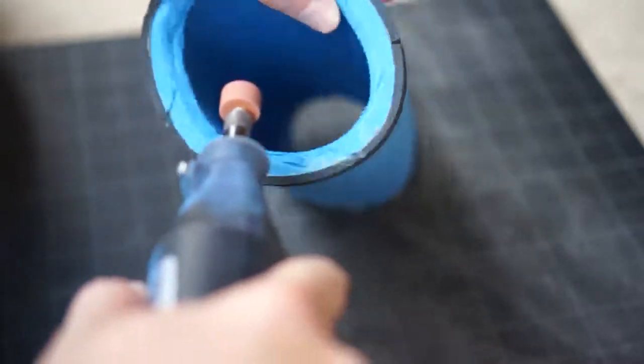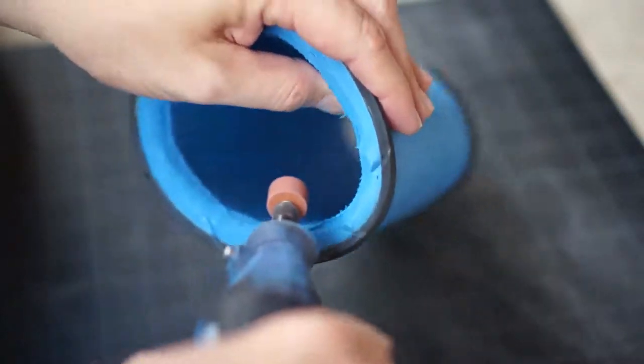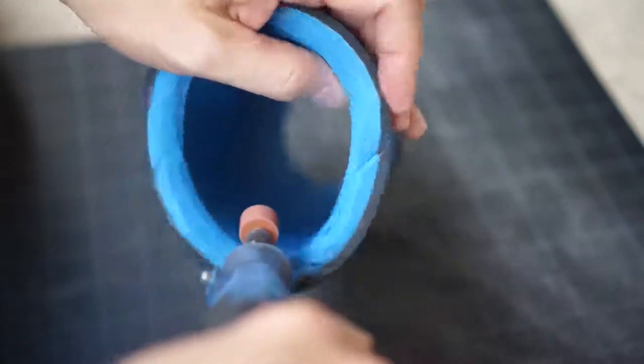I used a dremel with a grinding stone and sanded the inside edges of the bracer. This allowed my hand to slip in and out easier and take off the square edges.